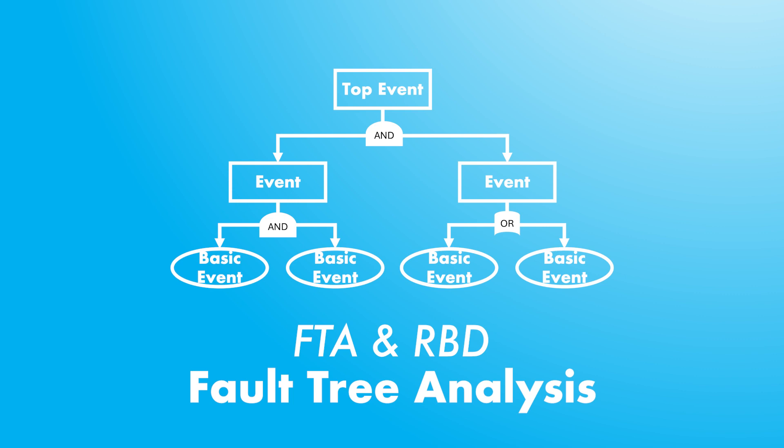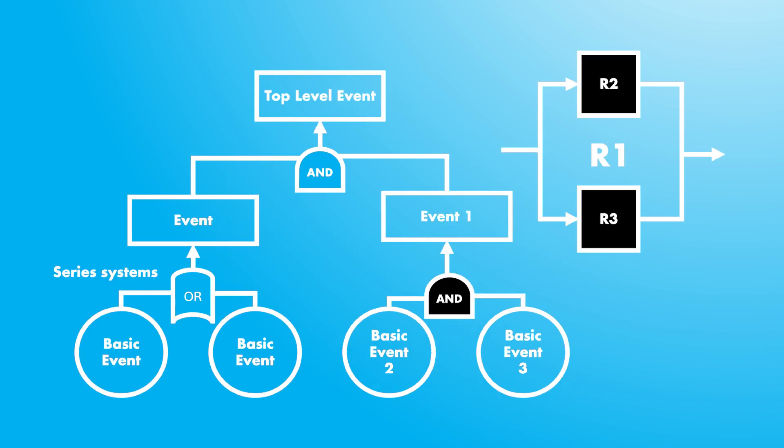Importantly, a fault tree can be converted into a reliability block diagram. When converting, the logic gates are transformed into reliability block diagram connections to represent the relationships between events. An AND gate becomes a parallel connection — in the fault tree, a parallel connection is represented by the logical AND gate, where the upper event will occur only if all lower events occur.